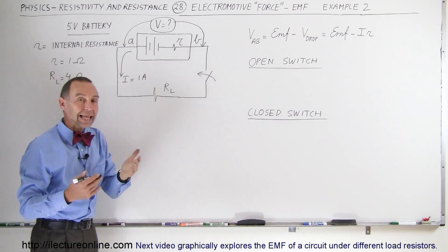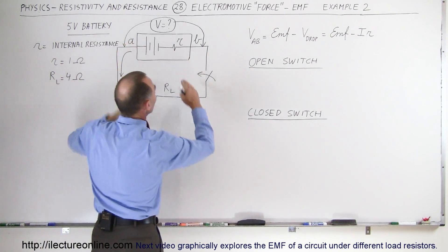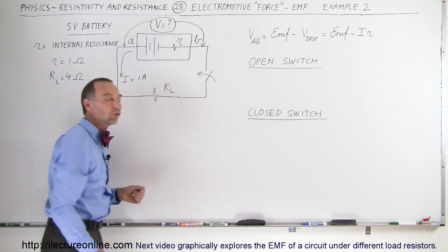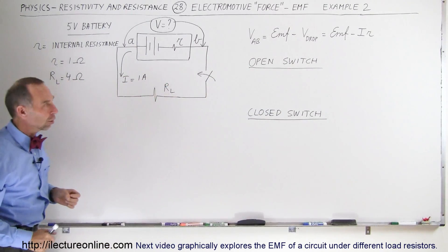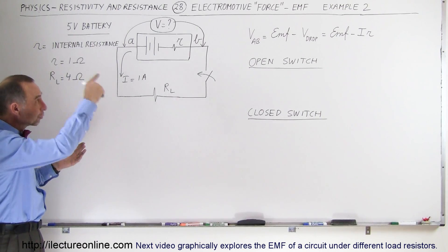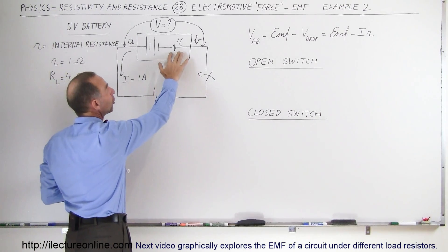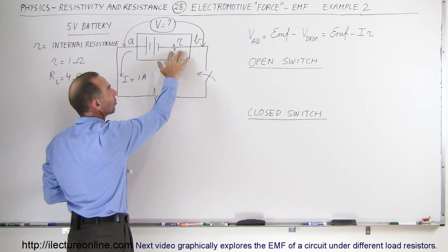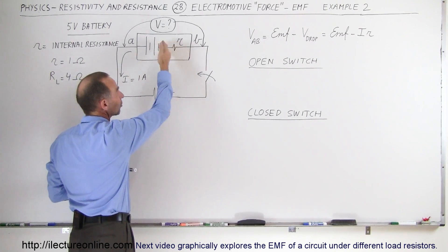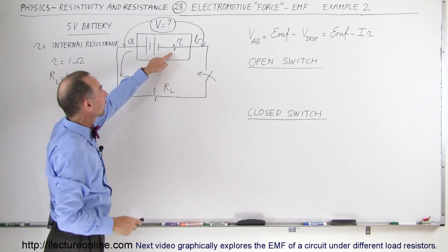We're going to look at the voltage between A and B — first when the switch is open, and secondly when the switch is closed. When the switch is open, there's no current flowing in the circuit, so there will be no internal resistance drop because there's no current.